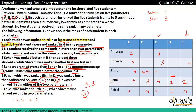Exactly two students were not ranked first in any parameter — one is Faisal and one is Shivam. Praveen gets rank one at least once, and Sohan must also get rank one. When Lana's rank is two in some parameter, and we know Lana is worse than Sohan in all parameters except D, Sohan's rank must be one there — because rank one is the only rank better than two. So rank one goes to Sohan, and rank five goes elsewhere.